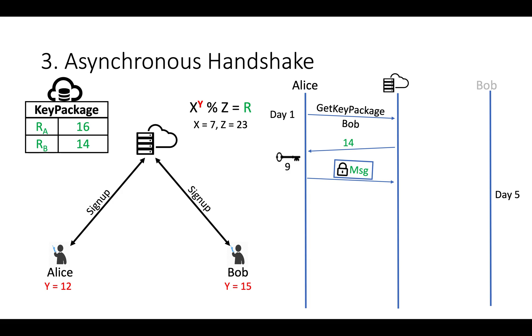Day 5, Bob came online and Alice went offline. Server send encrypted message to Bob. To derive key, Bob request Alice key package from server. Server return key package of Alice. Using Alice public info and own secret, Bob derive a key.